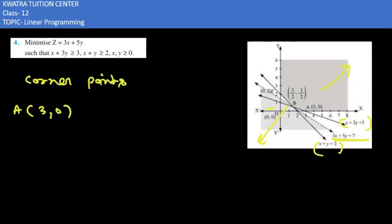Point A is (3, 0) as you can see the value of A is here, then B is (3/2, 1/2), and C is (0, 2).